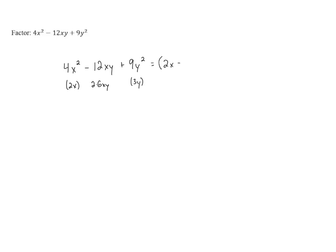so it's going to be 2x minus 3y times 2x minus 3y, or for those of you who like to write it as something squared, it'll be 2x minus 3y quantity squared.